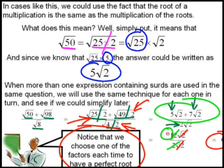Notice that we choose one of the factors every single time. So there the 50, there the 98 and there the 8. We've chosen it so that we've got a perfect square root every time. That's why we chose 25 times 2, 49 times 2 and 4 times 2.